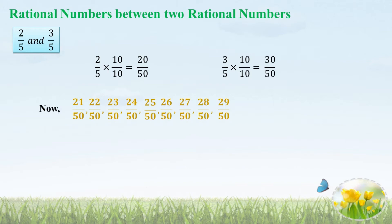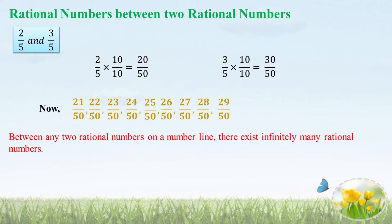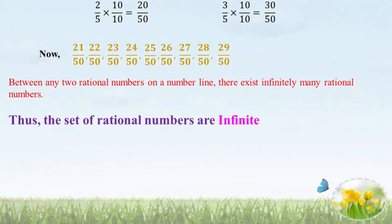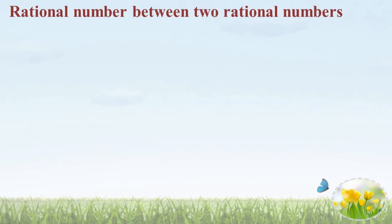How many numbers exist between 200 and 300? You know very well. The numbers between a rational number increase and increase on finding the equivalent fraction. Therefore, between any two rational numbers on the number line, there exist infinitely many rational numbers. We cannot count the numbers between two rational numbers. Thus, the set of rational numbers is infinite.